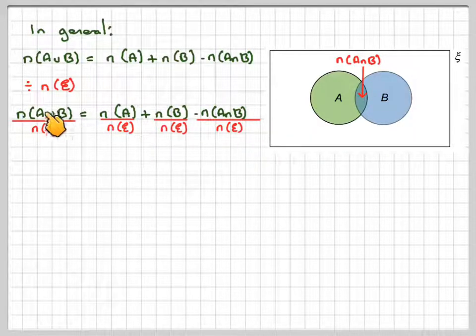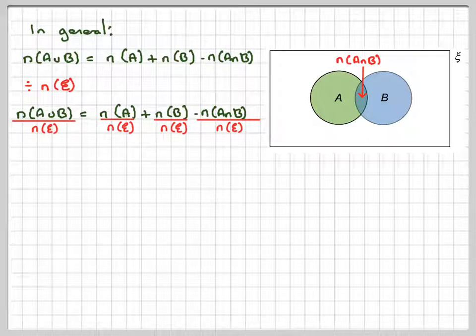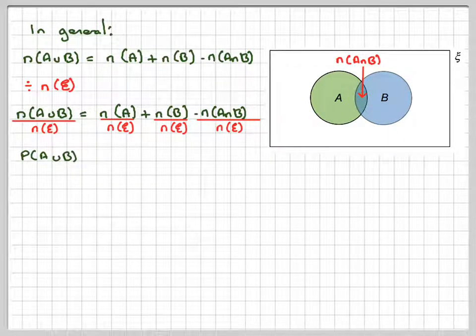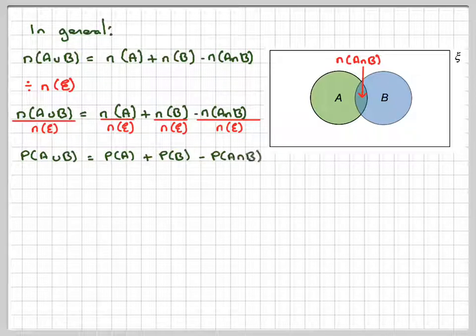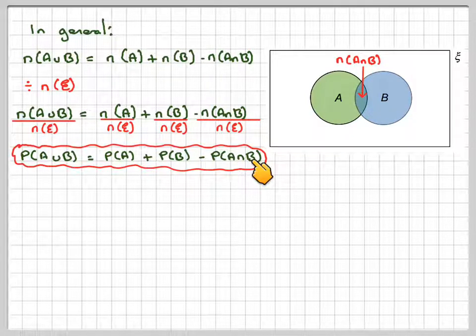The number in A set divided by the number in the universal set is the probability of A union B, which is equal to the probability of A plus the probability of B minus the probability of A intersection B.